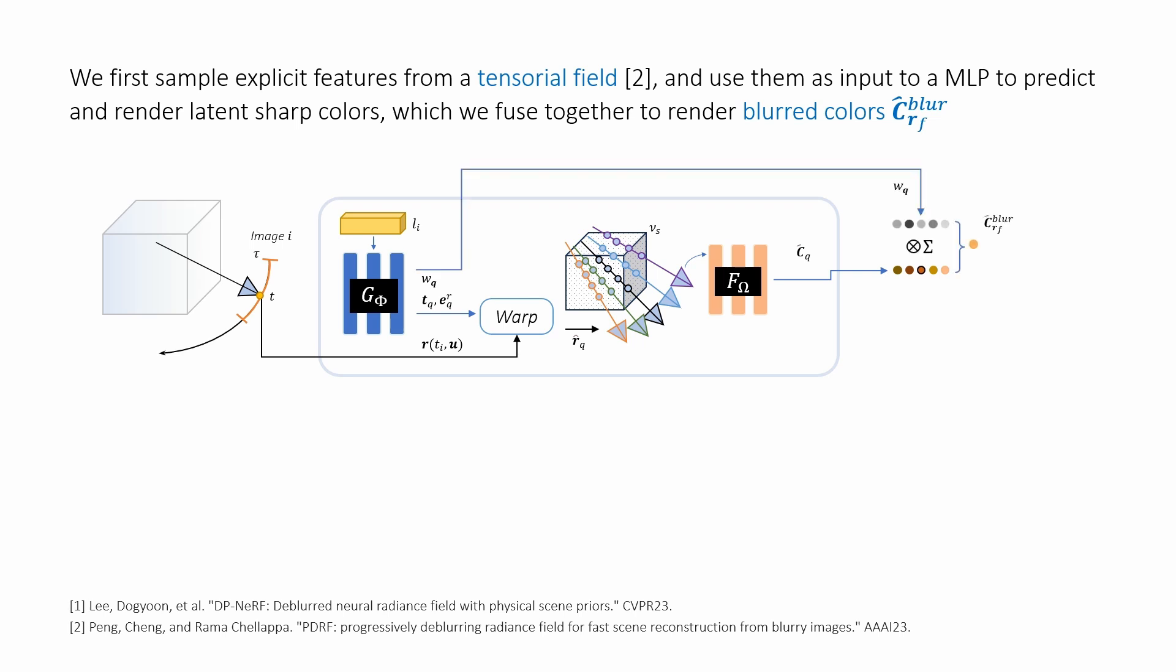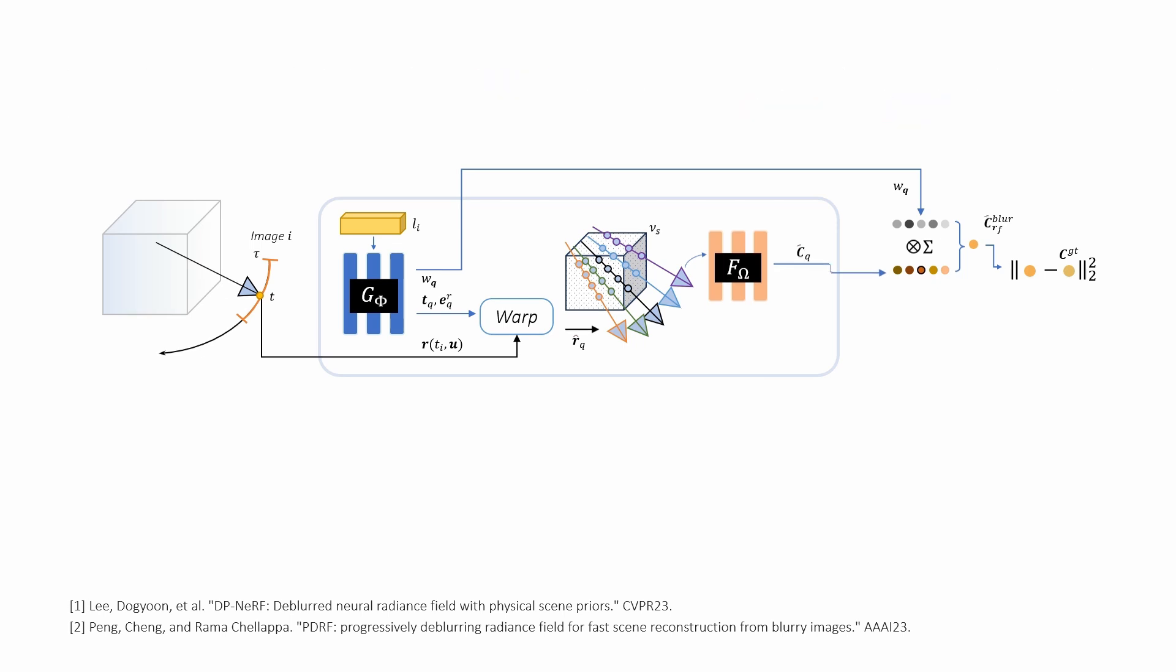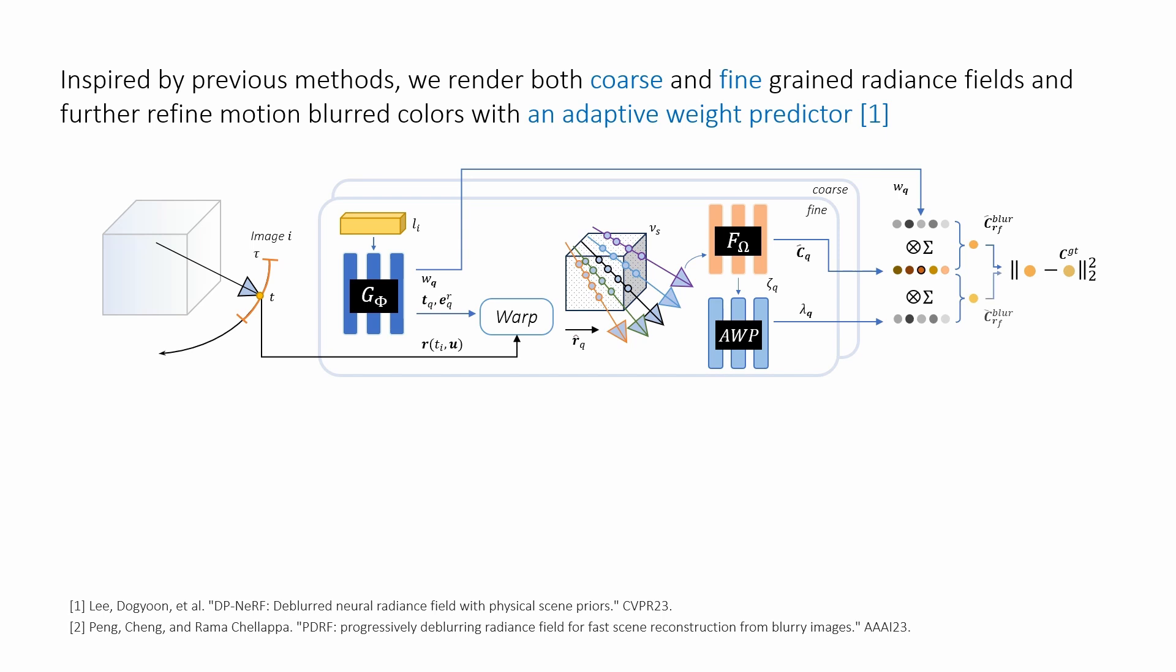Next, we combine the latent sharp colors to create a blurred rendering, which is compared with the original blurred image. We repeat this process at both coarse and fine levels, further refining the composite weights with an adaptive module.